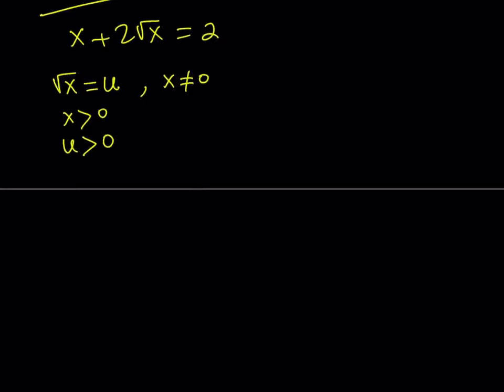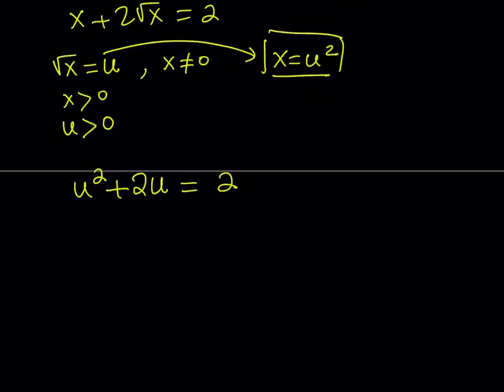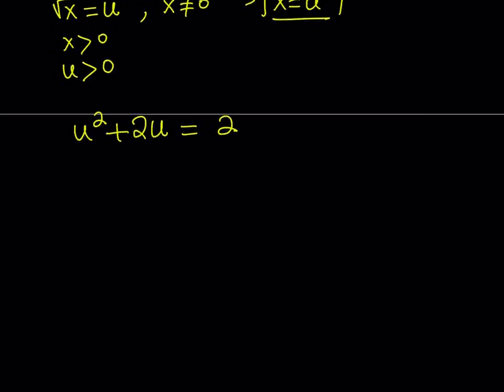Replace x with... What do we replace x with? Since square root of x is equal to u, this means x is equal to u squared. So that's what we're going to use for x. Let's go ahead and plug it in. We get u squared plus 2u equals 2. So we have u squared plus 2u equals 2.